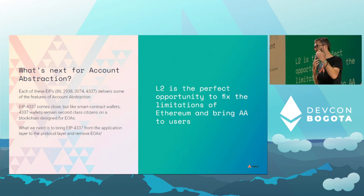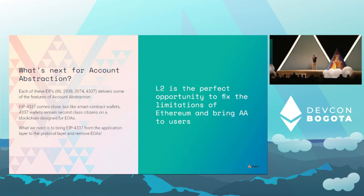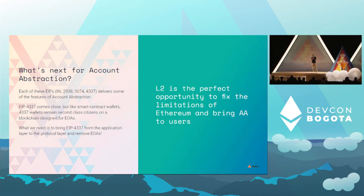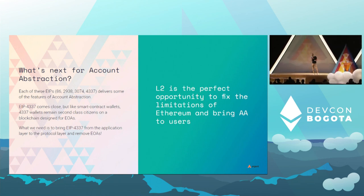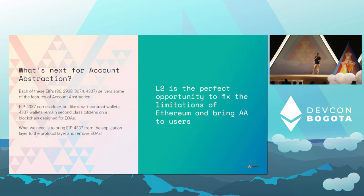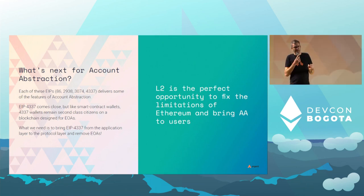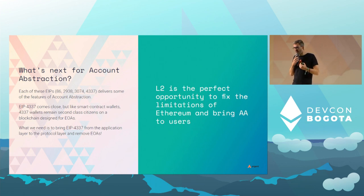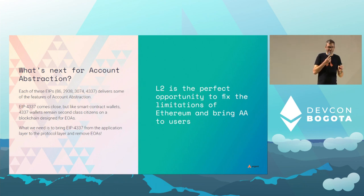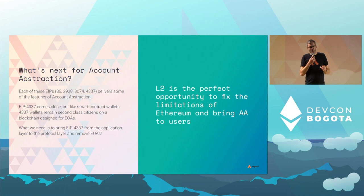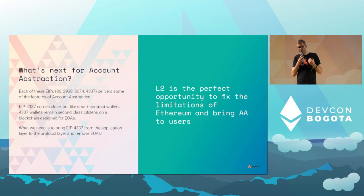What would be ideal is to bring 4337 one layer down — from the application layer to the protocol. The people who proposed 4337 are working on that right now. But at Argent we think we shouldn't wait for that to happen on L1. We're now in an era where layer twos are picking up — it's an amazing opportunity to fix some of the limitations of Ethereum. The EVM is a great VM, but there are some limitations we know can be improved, and layer two is the moment to do so.